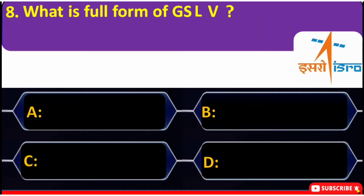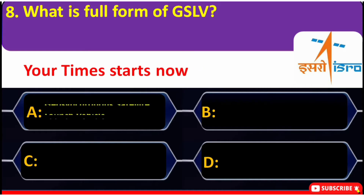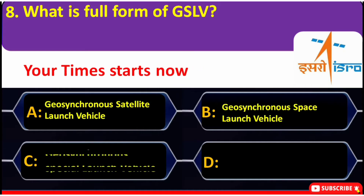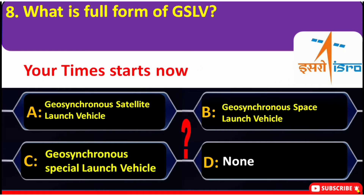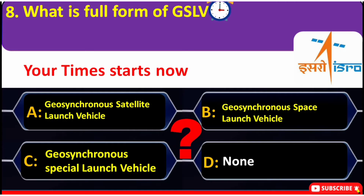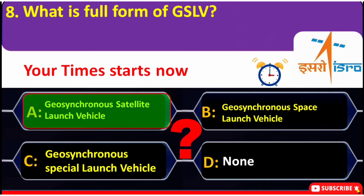What is the full form of GSLV? A. Geosynchronous Satellite Launch Vehicle, B. Geosynchronous Space Launch Vehicle, C. Geosynchronous Special Launch Vehicle, D. None. Correct answer is A — Geosynchronous Satellite Launch Vehicle.